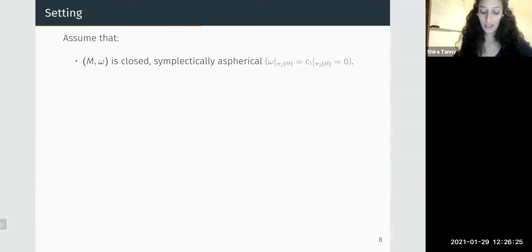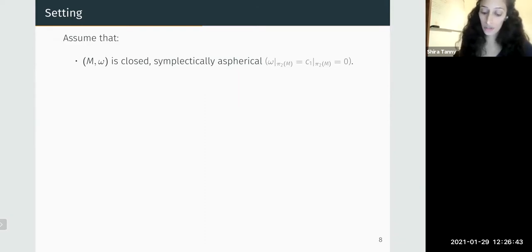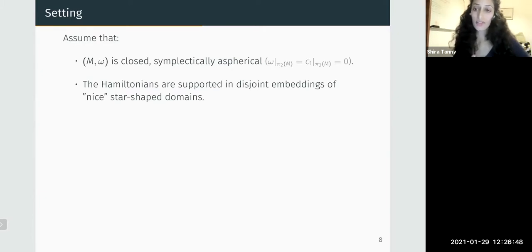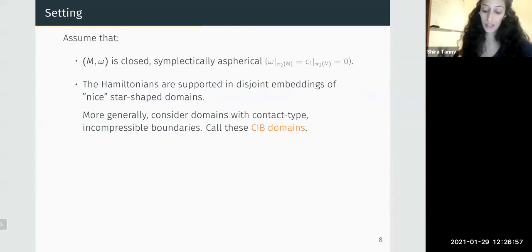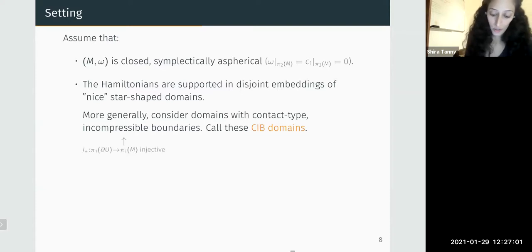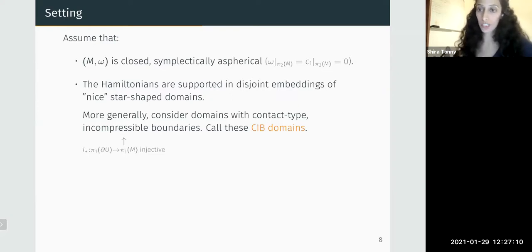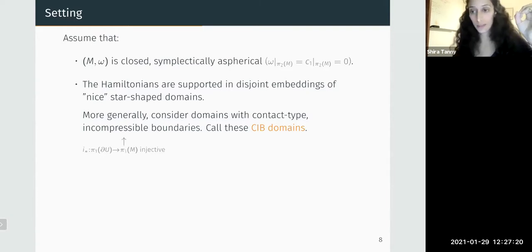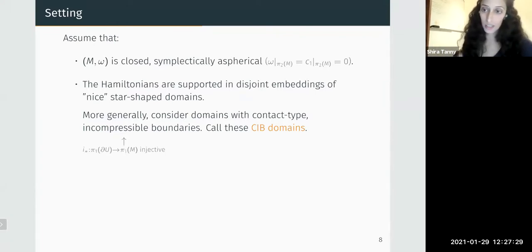From now on I assume M is closed and symplectically aspherical, meaning ω and the first Chern class vanish on π₂(M). I'll say more about why this assumption is crucial later. I assume Hamiltonians are supported in disjoint embeddings of nice star-shaped domains in ℝ^{2n} into M. More generally, it suffices to assume the domains have contact-type incompressible boundaries: incompressible means the map induced on fundamental groups by the inclusion of the boundary into M is injective — any loop on the boundary contractible in M must be contractible within the boundary. We call these CAB domains; you can simply think of nice star-shaped domains embedded in a symplectically aspherical manifold.